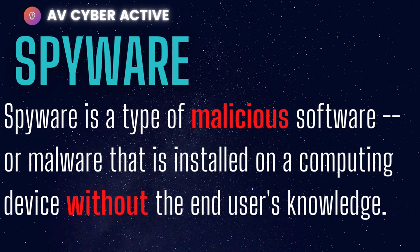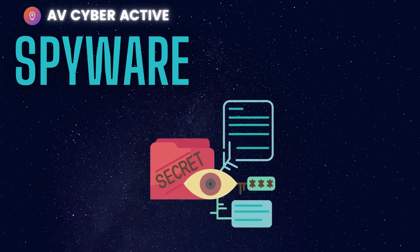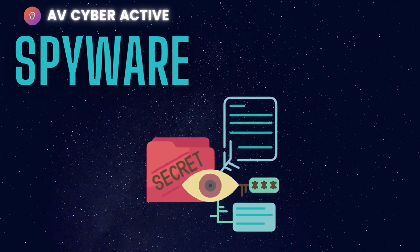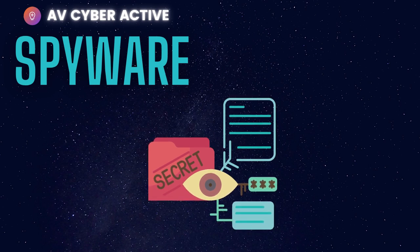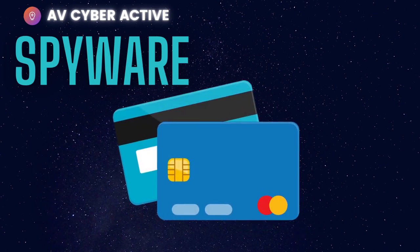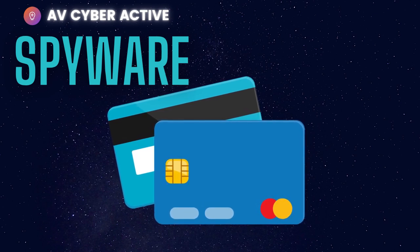The last type is spyware. Spyware is a type of malicious software that is installed on a computing device without the end user's knowledge. Spyware is one of the most common threats to internet users. Once installed, it monitors your internet activity, tracks login credentials, and spies on your sensitive information. The primary goal is to obtain financial data such as credit card numbers, banking information, and passwords.